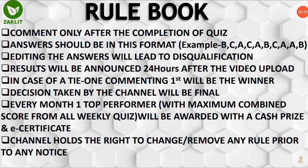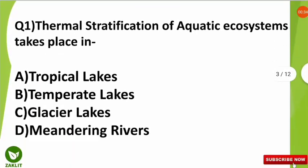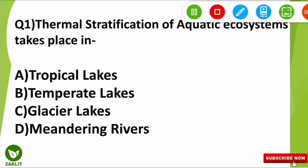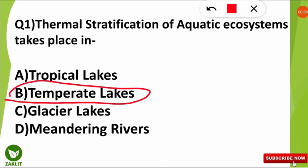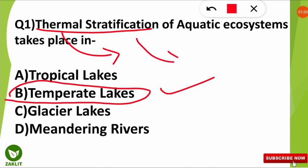Let's discuss the questions first. The first question was: the thermal stratification of the aquatic ecosystem takes place in which of the following places? The correct option is that thermal stratification of the aquatic ecosystem takes place in temperate lakes. Thermal stratification means, as per the temperature, there is stratification — that is, layers — in the lakes.